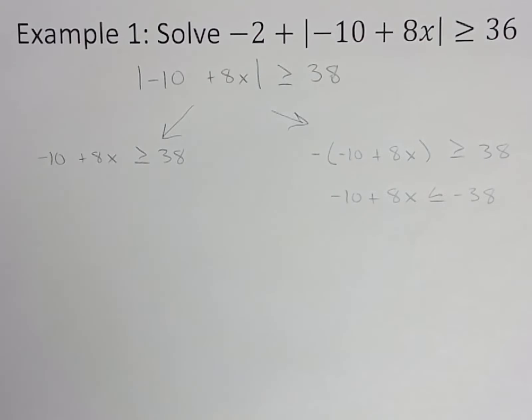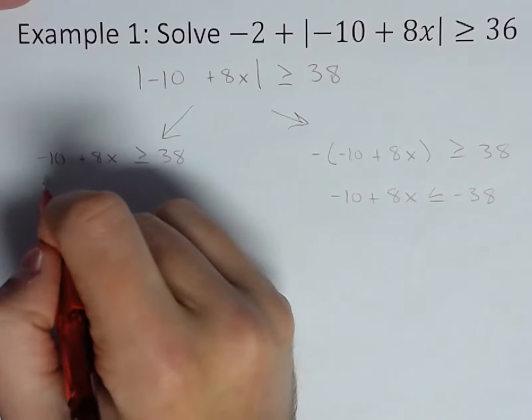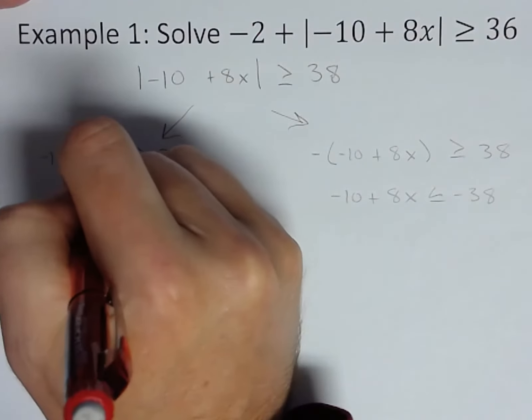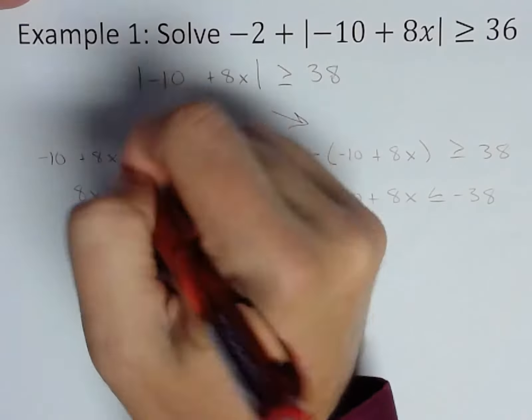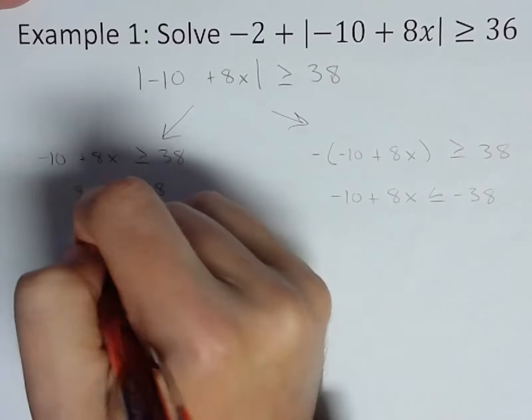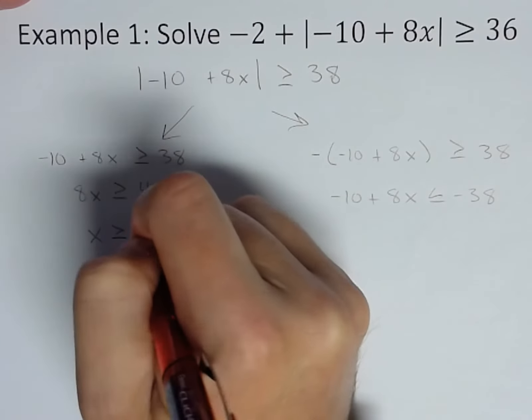Now we've got our two equations. Let's go ahead and solve them. Add 10 to both sides, so 8x greater than or equal to 48, and divide by 8. So x is greater than or equal to 6.